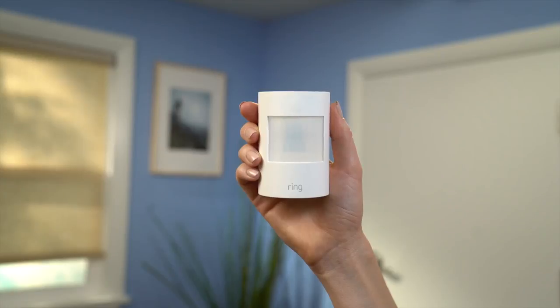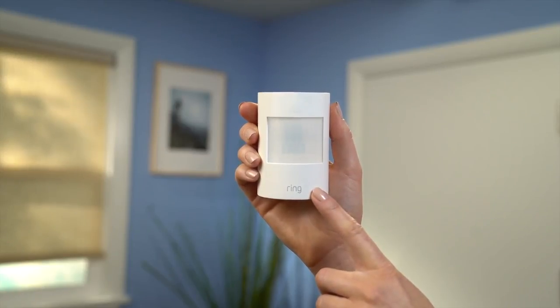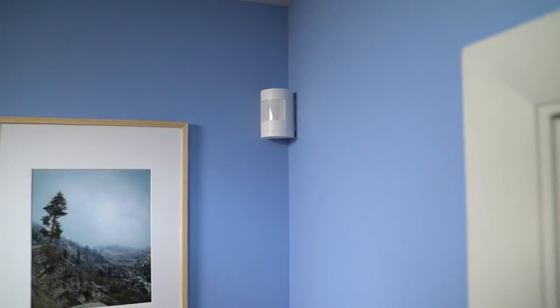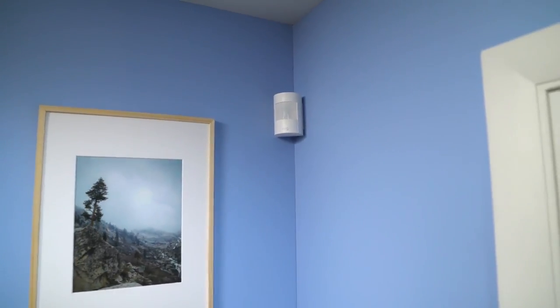A motion sensor looks for movement in a large area. While a contact sensor monitors one entry point, a motion sensor watches a room and senses if anything's happening anywhere in the room.